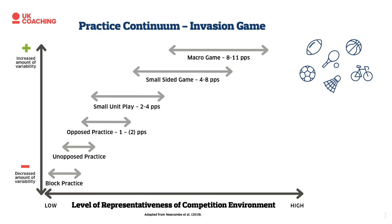As you move down the continuum, we shift to small-sided games with around four to eight players — this is where the 'bang for your buck' argument comes in. Players get lots of repetitions and touches in a 4v4, and still encounter some principle-based tactical decisions, especially moving towards 6v6 or 7v7. Small unit play — 3v2s, 2v2s — gives loads of interactions with the ball and lots of goes, with decisions made around two players interacting, but without the broader tactical elements of bigger games.